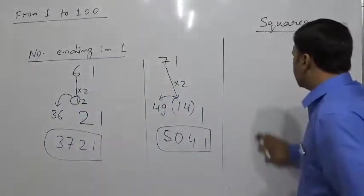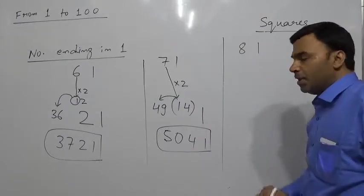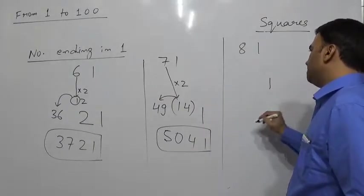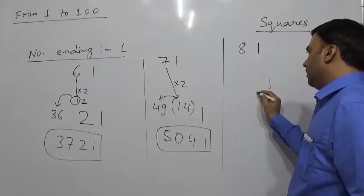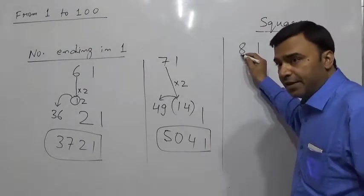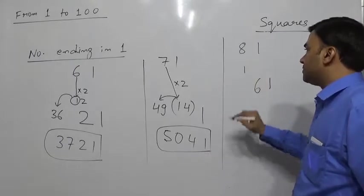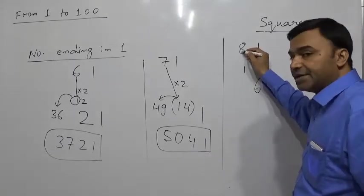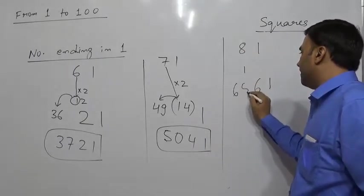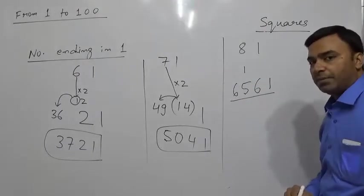Suppose we have 81. In the end 1² = 1; in the middle 8 × 2 = 16, so 6 comes here and 1 carries forward to 8² = 64, giving 64 + 1 = 65. The square of 81 is 6561.